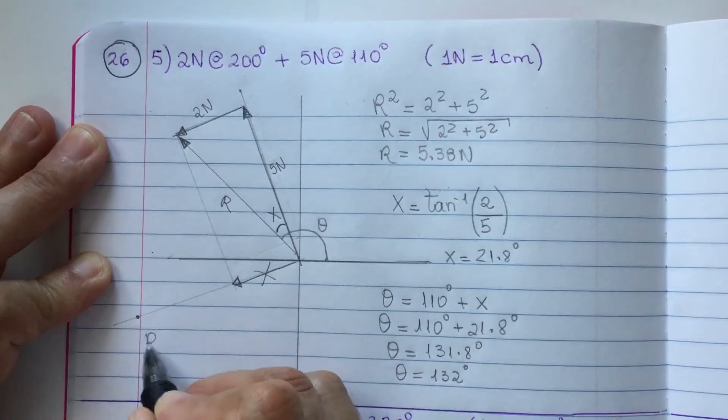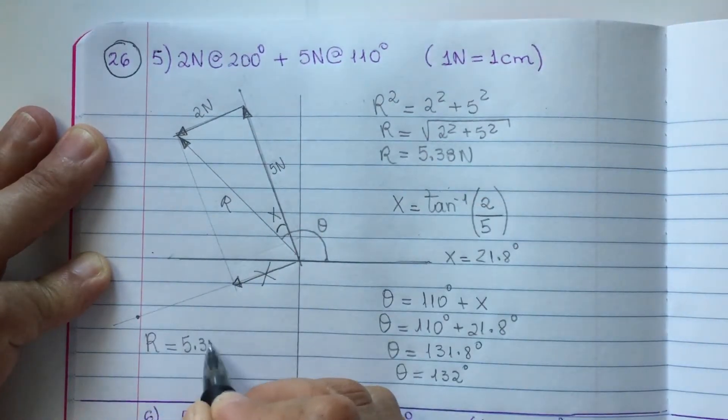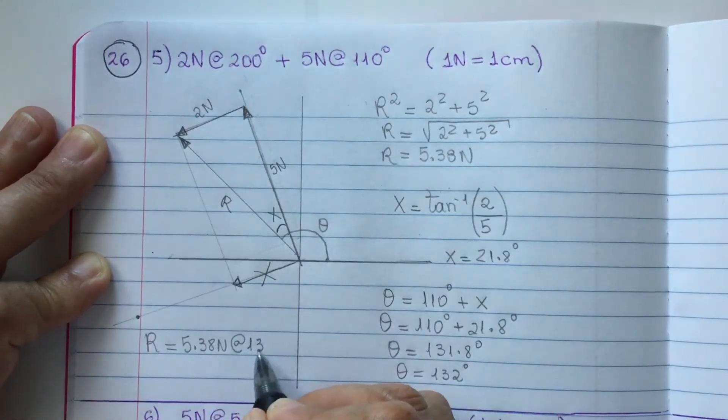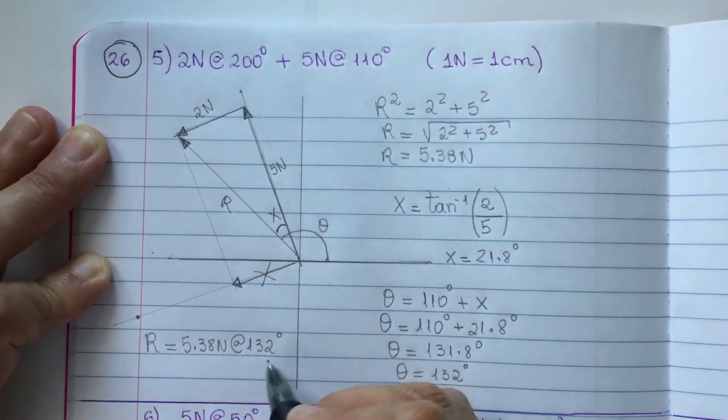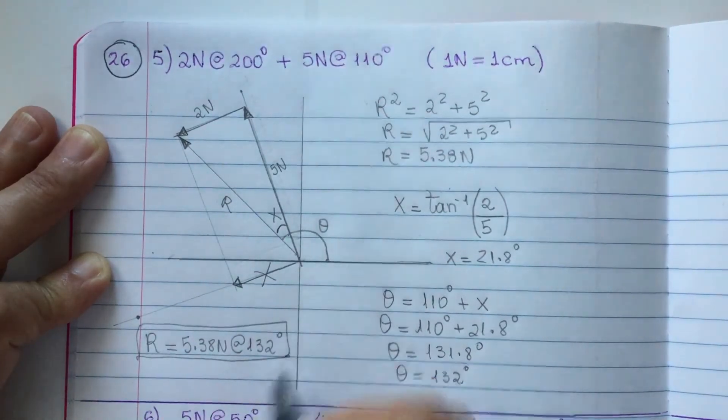So, your final answer for this problem is, your resultant is 5.38 newton at 132 degrees. Final answer. 132 degrees.